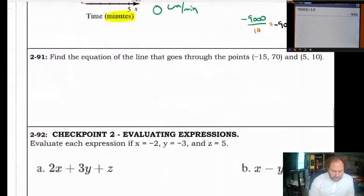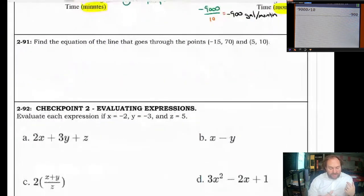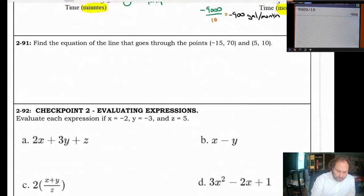Well, you could say it's losing water at a rate of positive 900, or you could just say that the rate is negative 900, indicating that it's leaving the tank with the negative number. Next question, 291. Find the equation of the line that goes to the point negative 15, 70, and 5, 10. So, this is what we're kind of doing in class the next couple days. This is exactly what you need to be able to do. Very straightforward problem.